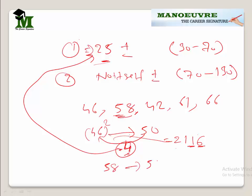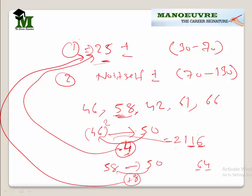Let's take 58. Again I compare it to 50 — it is 8 more. So 8 squared is 64, write it here. Since it is 8 more, I will add 8 to 25: 25 plus 8 is 33. So 3364 is your final answer for 58 squared. The key rule: if the number is less than 50, you find its square and subtract from 25; if it is more, you add.